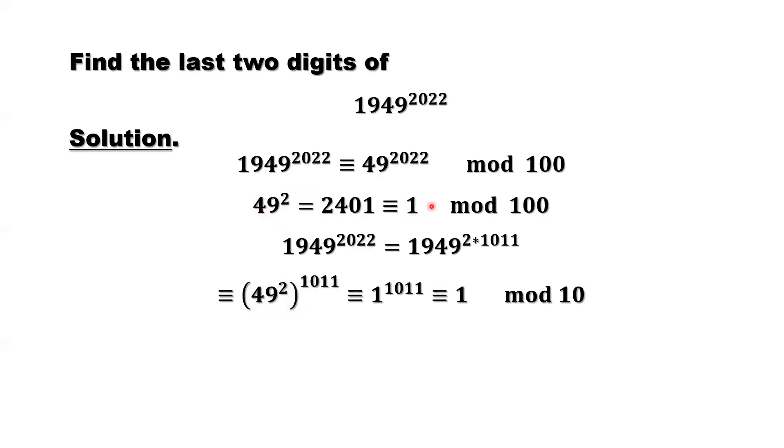That's the remainder divide by 100, that's 1. 1 to the power of 1011 equals 1.